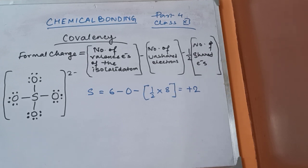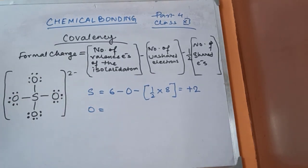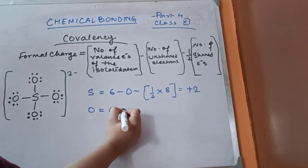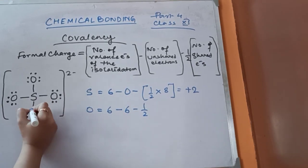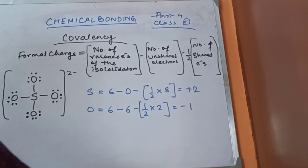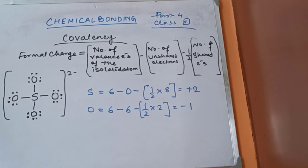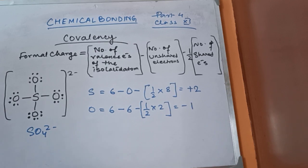Since the bonding for all the oxygen atoms in sulphate is the same, all of them will have the same formal charge. For each oxygen: number of valence electrons is 6, unshared electrons is 6, shared electrons is 2 for this single bond (half = 1). So: 6 minus 6 minus 1 = −1. The formal charge on all oxygen atoms of sulphate is −1.